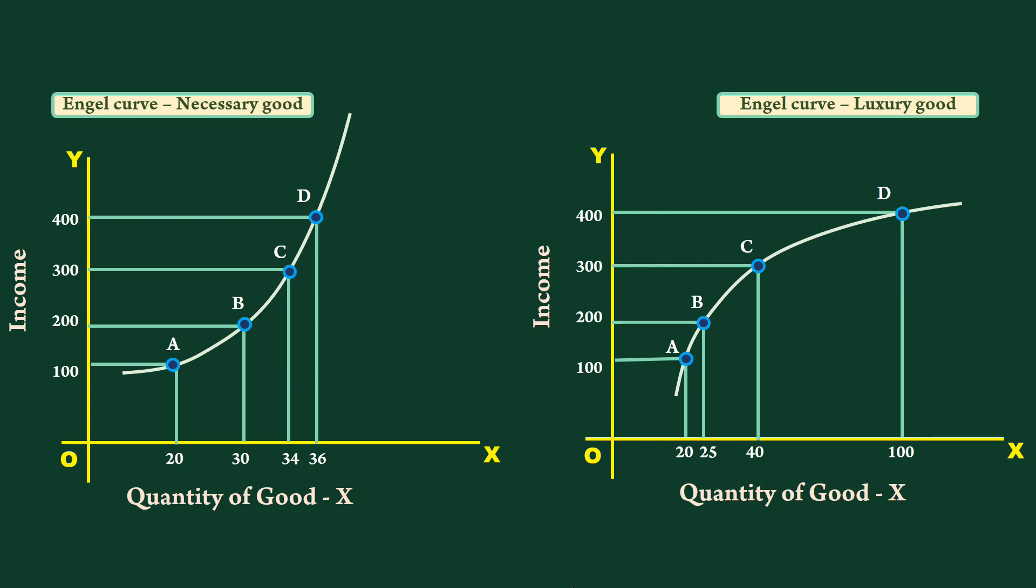Even if we obtain the curve using income and quantity as variables, the law will still hold good. And the shape of the curve also will not change, provided the prices of goods remain constant.